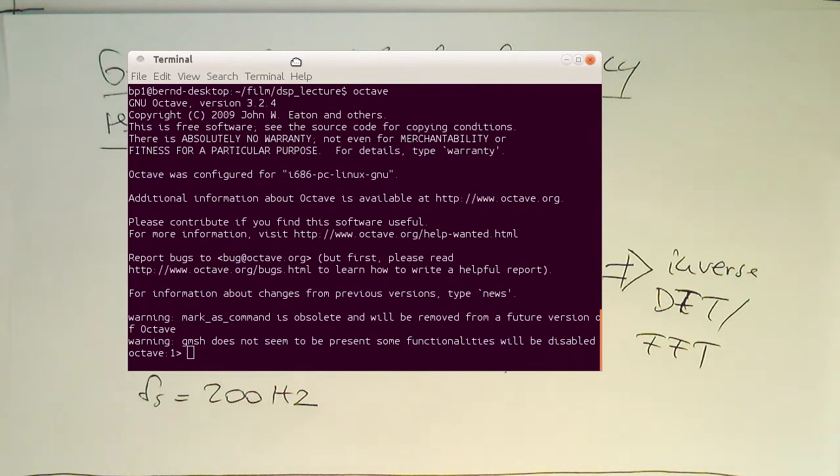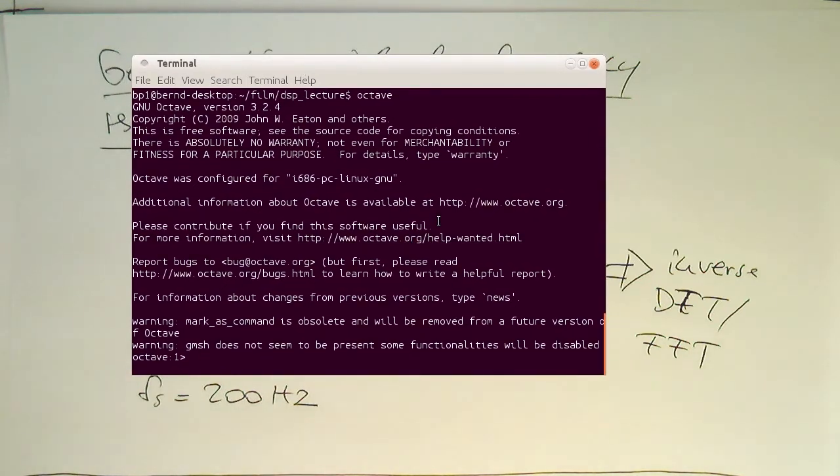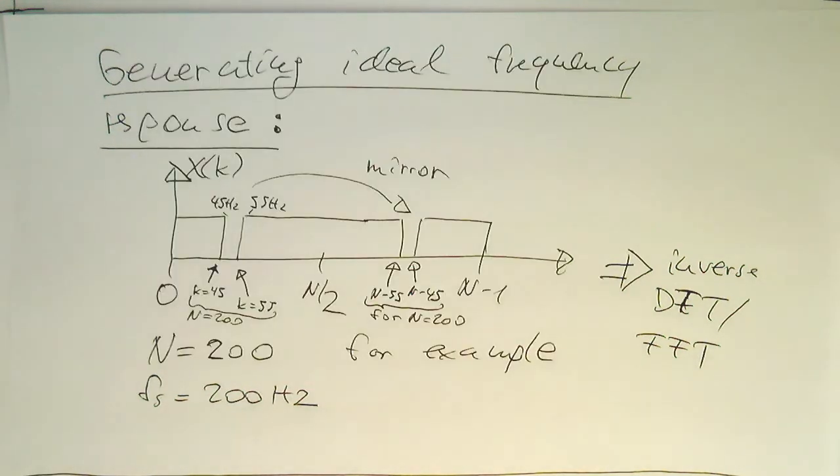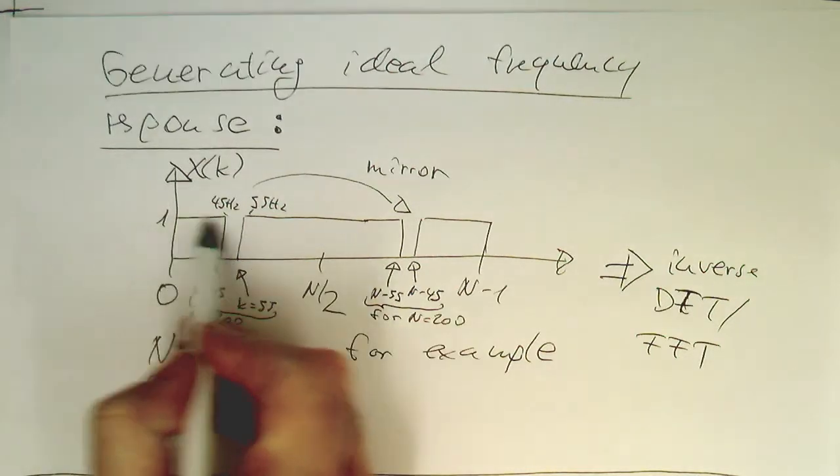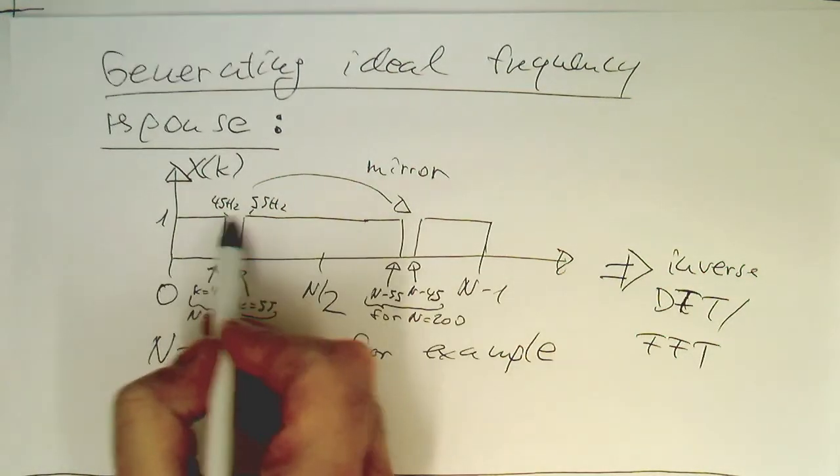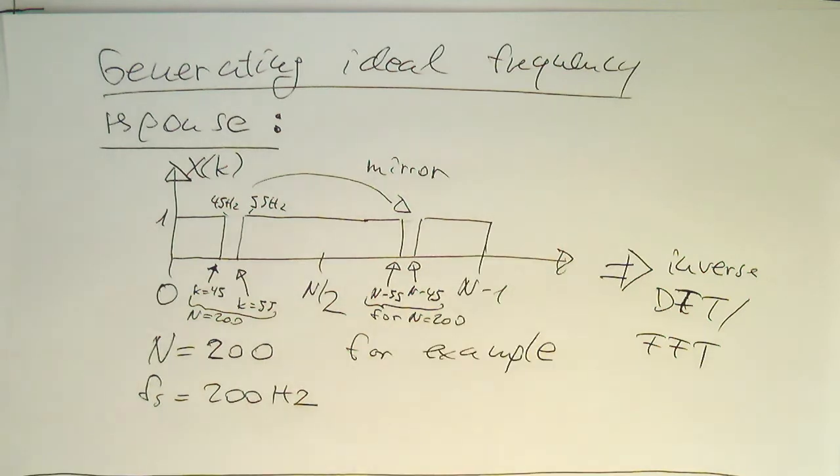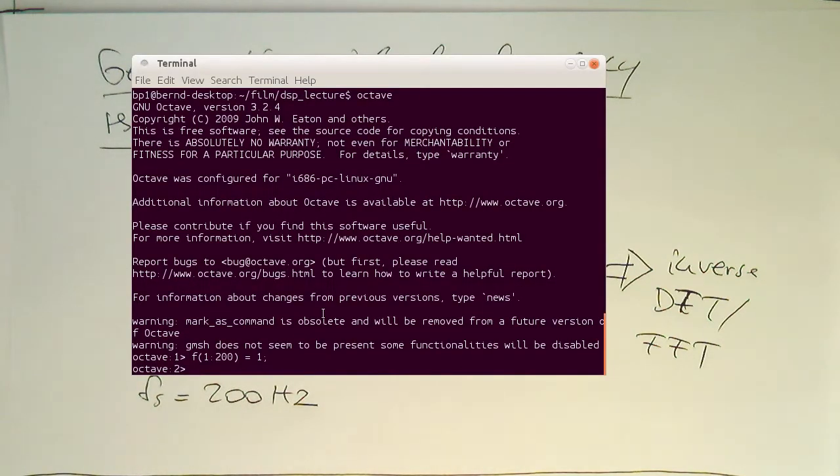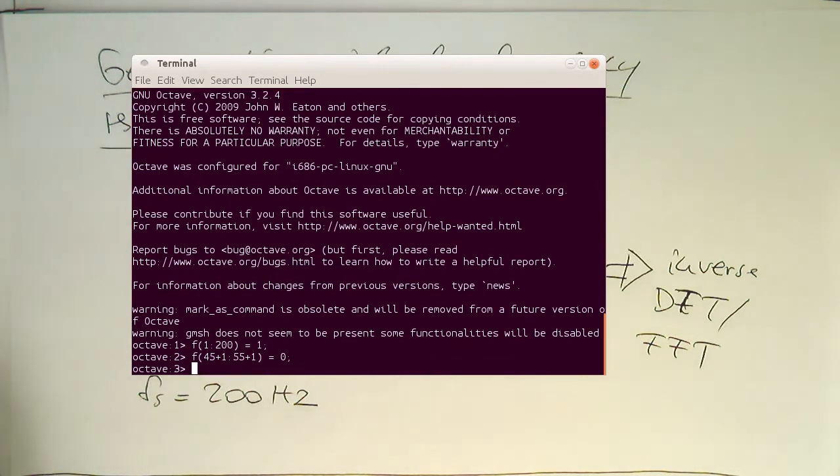So let's bring up octave here. So what we do is let's first create a vector of 200 samples of one. So this gives us here just this line here, so that we have here continuously once everywhere. So now let's create our ideal band stop response.